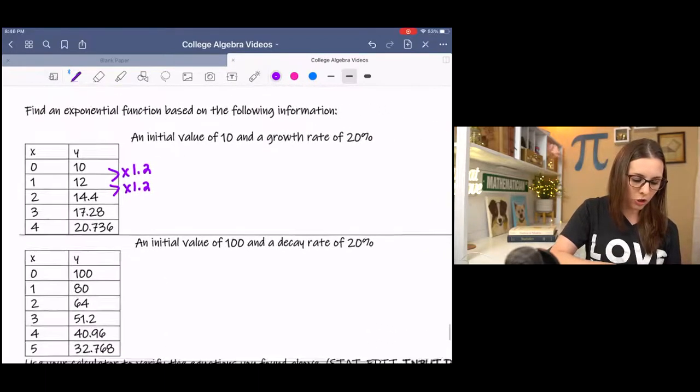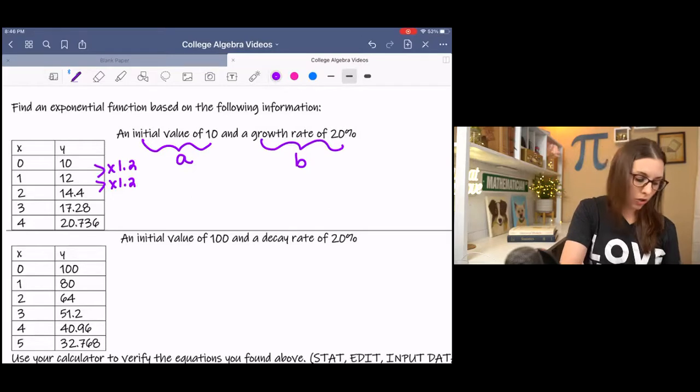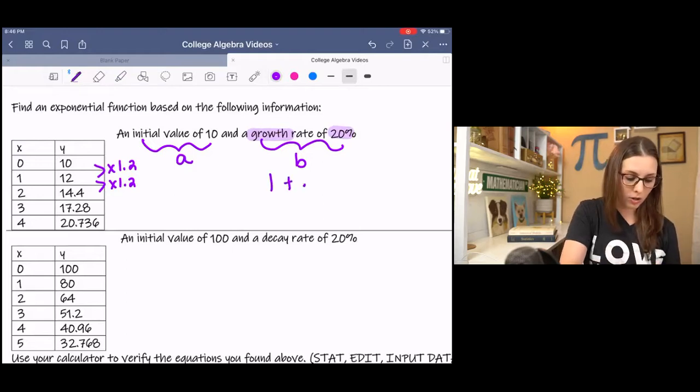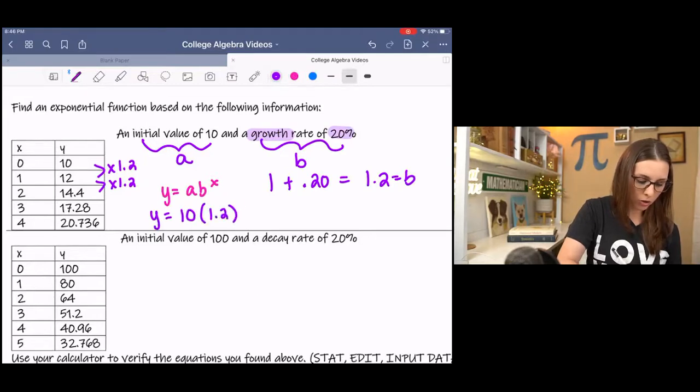And then if I look at the information given, it says the initial value is 10, and the growth rate is 20%. So, since it's growing, that means it's going to be above 1, and that's going to be 1.2 for our b value. And if we use our parent function, then we know it's going to be 10 times 1.2 to the x.